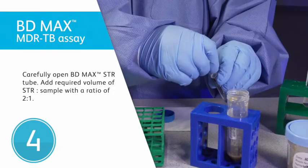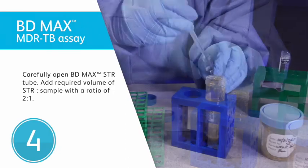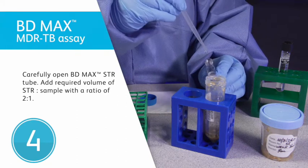Carefully open the BD-MAX STR tube and add the required volume so that the final ratio of STR to sample is 2 to 1.